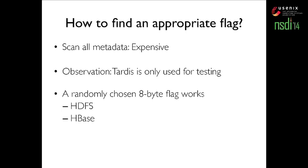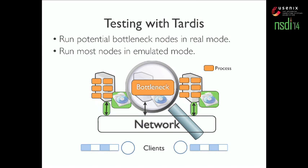Now with the powerful TARDIS tool, how do we use it to test the scalability of a prototype? We run most nodes in emulated mode — co-located with many others on the same machine — and a few nodes in real mode, not co-located. This combination works like a magnifying glass, letting us focus on the parts that are not emulated, and we typically run potential bottleneck nodes in real mode.